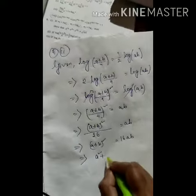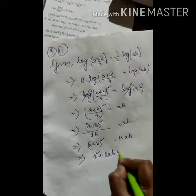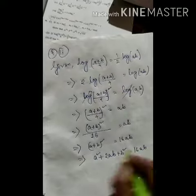Using the formula, a² + 2ab + b² is 16ab.